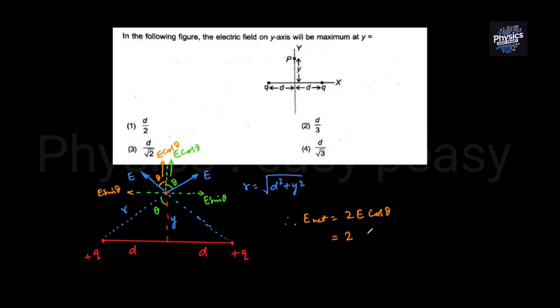The electric field is kq divided by r squared. The value of cos theta, using adjacent y and hypotenuse r, is y divided by r. So the expression is 2 times kq times y divided by d squared plus y squared to the power 3/2.